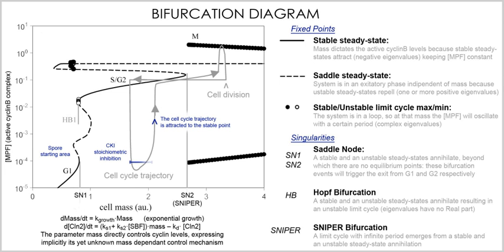Stochastic processes involve a random mapping between an initial state and a final state, making the state of the system a random variable with a corresponding probability distribution. These include: non-Markovian processes using a generalized master equation (continuous time with memory of past events, discrete state space, with waiting times between transitions); jump Markov processes using a master equation (continuous time with no memory of past events, discrete state space, waiting times exponentially distributed — see Monte Carlo method, dynamic Monte Carlo method and Gillespie algorithm); and continuous Markov processes using stochastic differential equations or a Fokker–Planck equation (continuous time, continuous state space, events occurring continuously according to a random Wiener process).